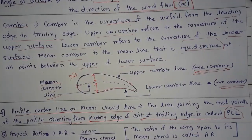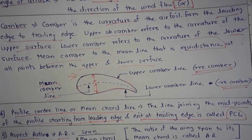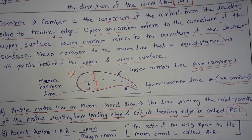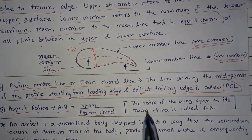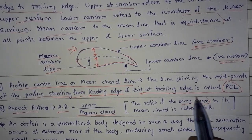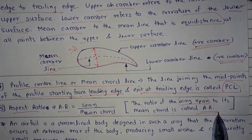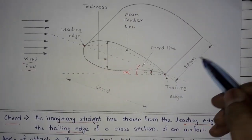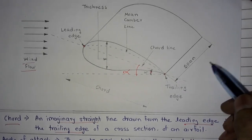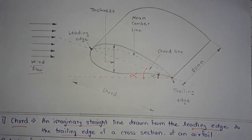Next is aspect ratio. Aspect ratio is equal to span divided by mean cord. The ratio of the wingspan to its mean cord is called the aspect ratio. The span is the length of the airfoil, shown here in the diagram.